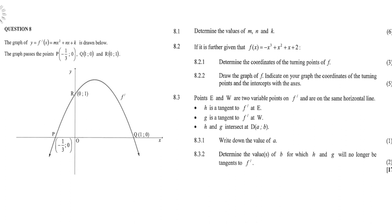Points E and W are two variable points on the derivative and are on the same horizontal line. H is a tangent to the derivative at E, G is a tangent to the derivative of f at W, and H and G intersect at D(a, b). Write down the value of a, and determine the values of b for which H and G will no longer be tangent to the derivative of f.